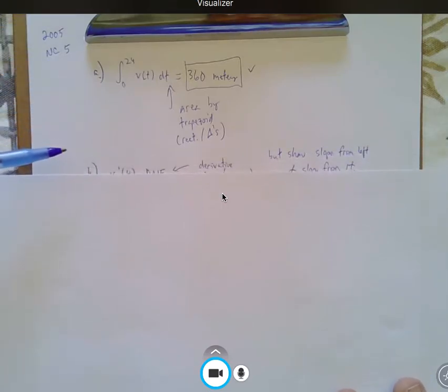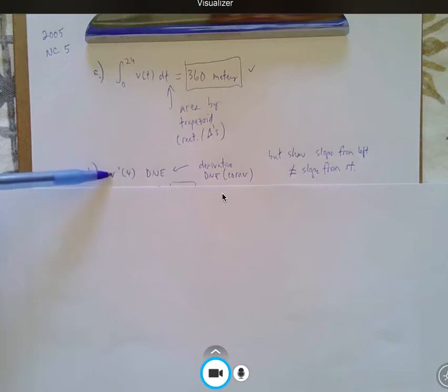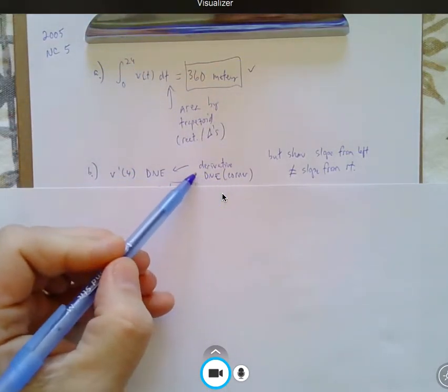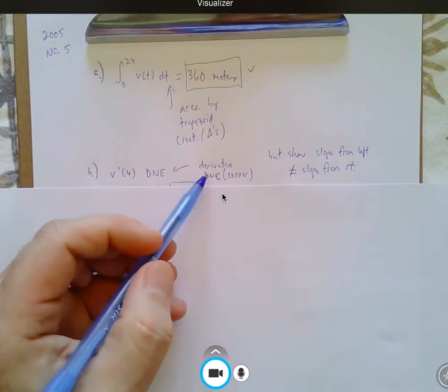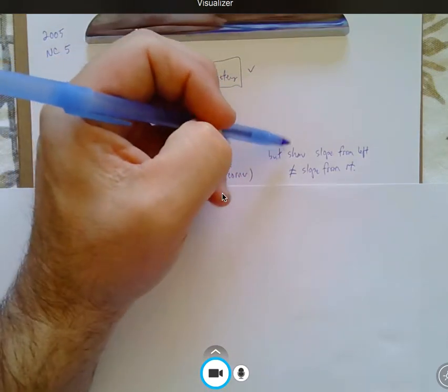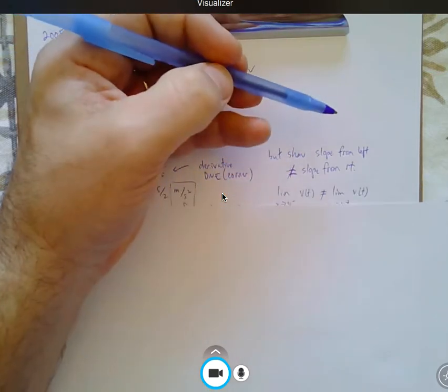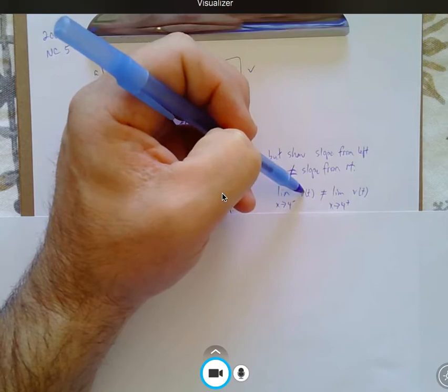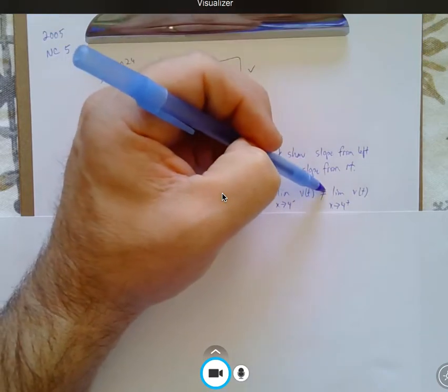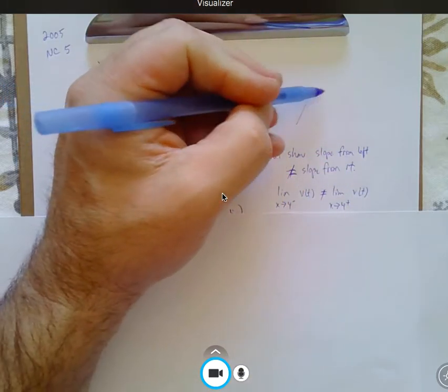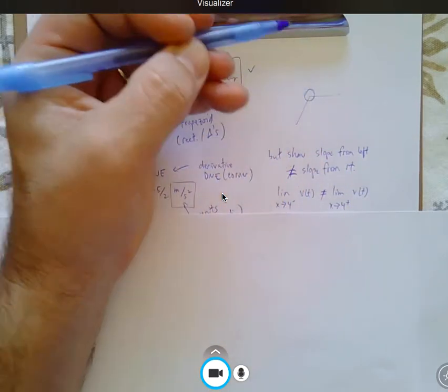Part B, what's V prime of 4? Well, V prime of 4 is the acceleration at time 4, but that doesn't exist because the graph, if you look at the graph for this problem, that's where the graph meets at a corner. Now, the APs are not going to accept you saying the graph meets at a corner. You have to show the slope from the left is not the same as the slope from the right. The limit as x approaches 4 from the left of the derivative graph is positive, and the limit as x approaches 4 from the right of the velocity graph is 0. So that graph just has a derivative that doesn't exist.